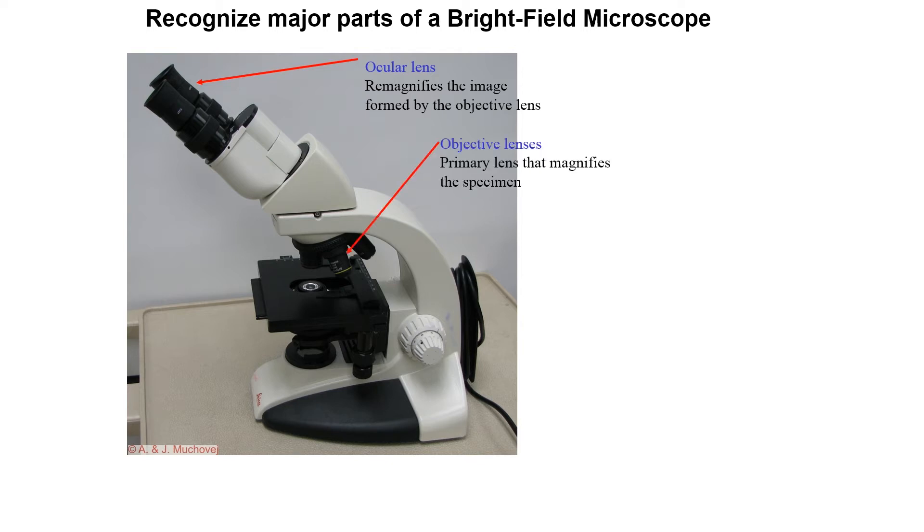We have the objective lenses which are the primary lens that magnifies the specimen. Remember these are very small because they need to have a great deal of magnification to them.